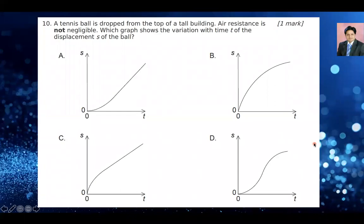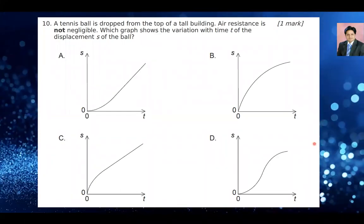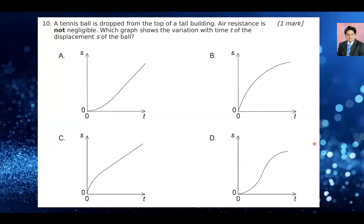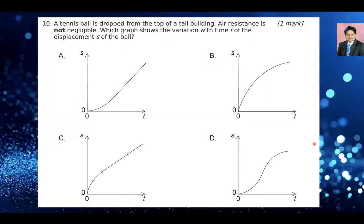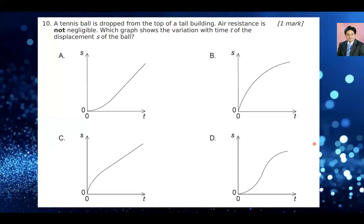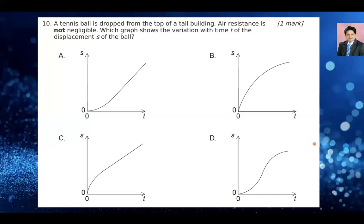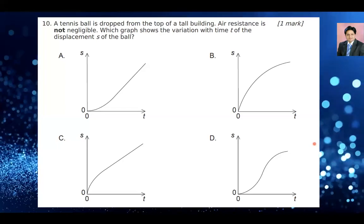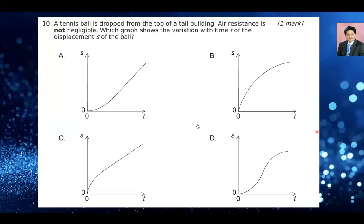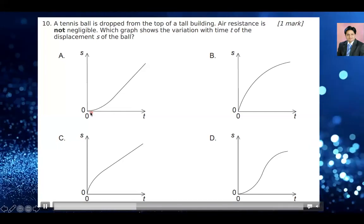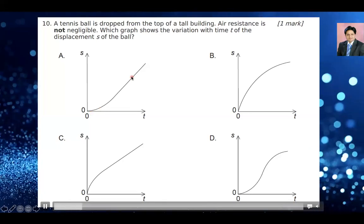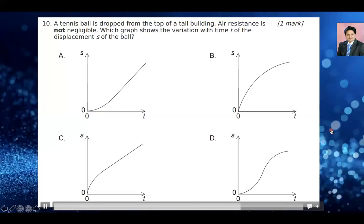A tennis ball is dropped from the top of a building. Air resistance is not negligible, so there is air resistance acting. Which graph shows the variation with time t of the displacement s of the ball? The displacement keeps on increasing, so we need an increasing curve. Option E is the increasing curve, so E is the right answer.